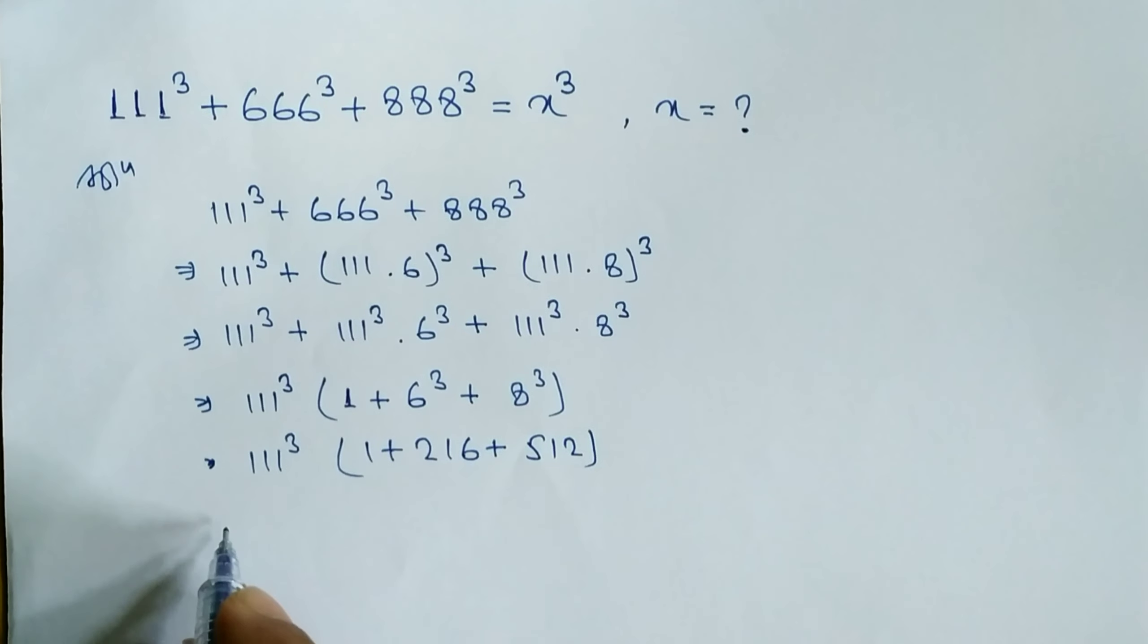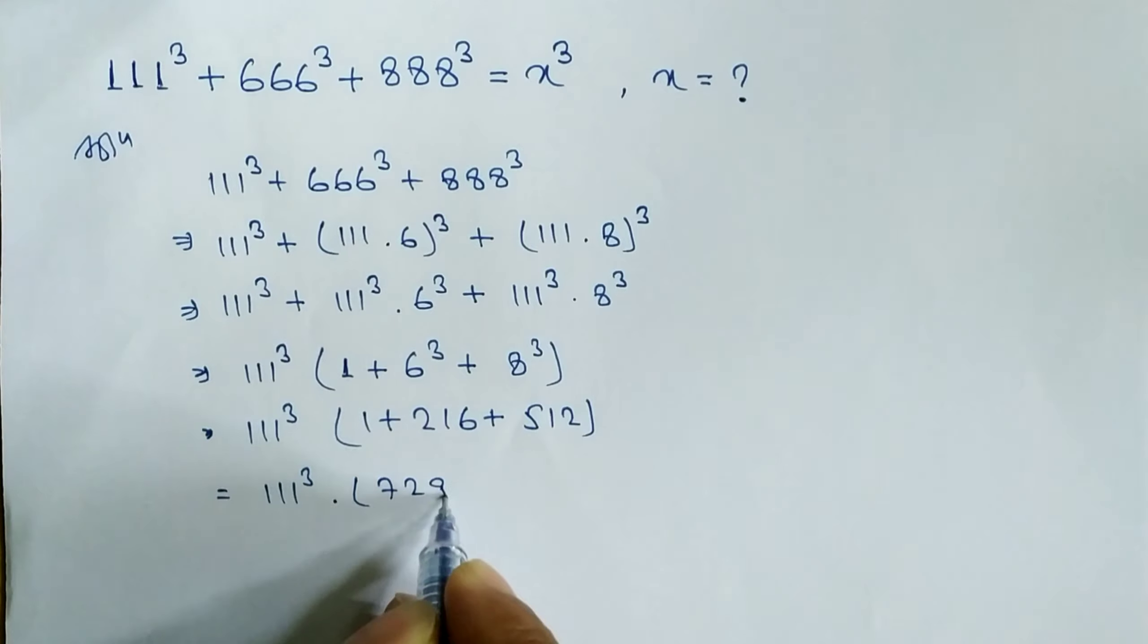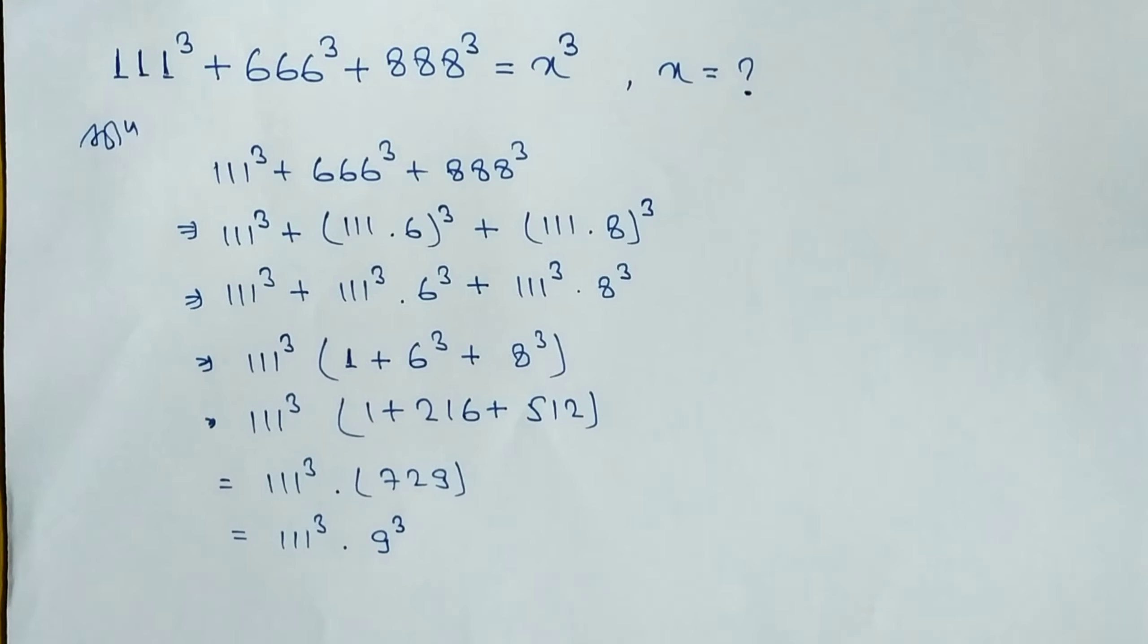After this, when you add 111³ × 729. Now 111³ × 729, this is the power of cubic cube root. 729 = 9³, so we have to write in this form. Now you can see here, here is the power 3, here also power 3.